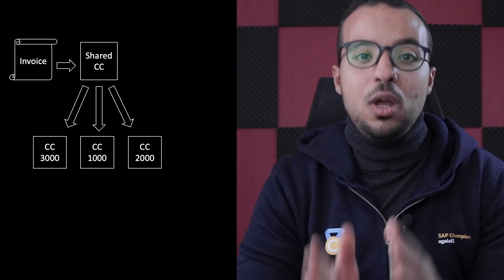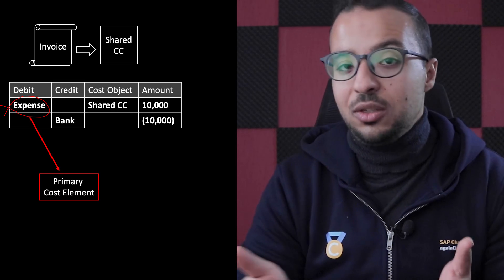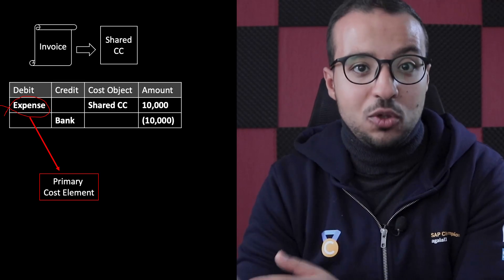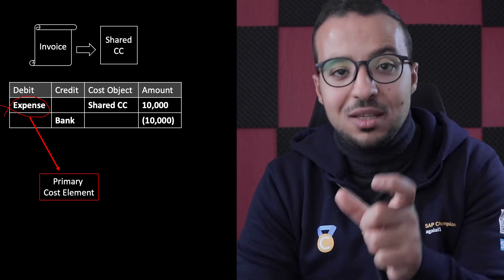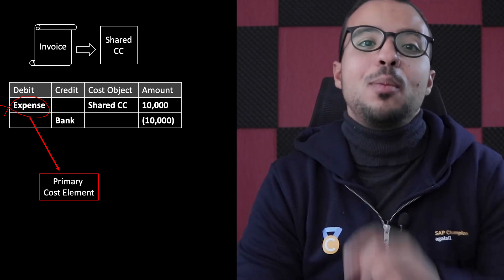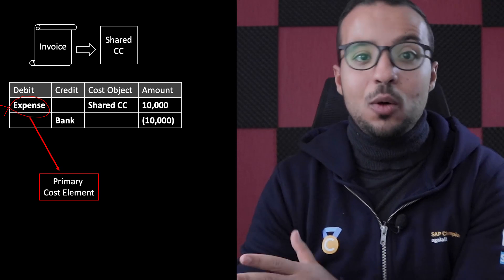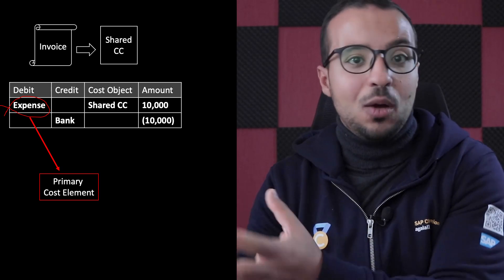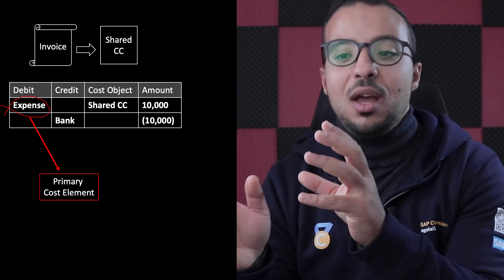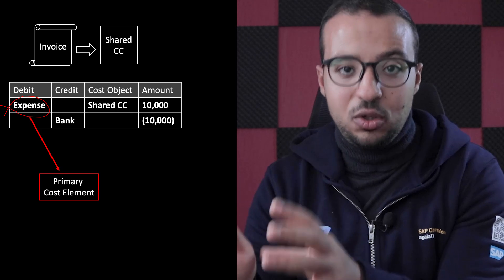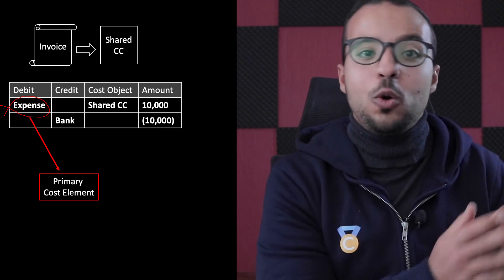In the first step, we post an accounting entry: debit to electricity expense on the shared expenses cost center and credit to our bank account. The account we use to post the electricity expense is a primary cost element because it is coming from a financial accounting entry — it originates from an external accounting entry. This primary cost element, when we post the accounting entry, will also be posted to our controlling area.